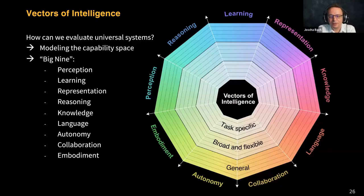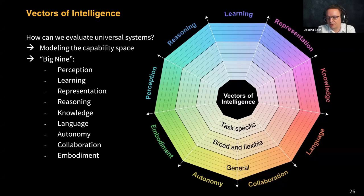So how can we identify what it means to be general? In my cognitive computing group at Interlabs, we thought about this and came up with a space of capabilities with several dimensions — we call them the Big Nine. These basic capabilities are: perception, learning, representation, reasoning, knowledge, language, autonomy, collaboration, and the ability to be embodied, which is very relevant to robots.